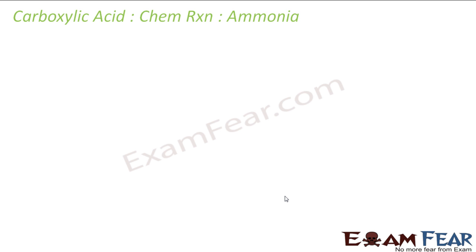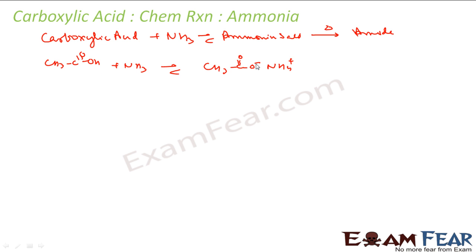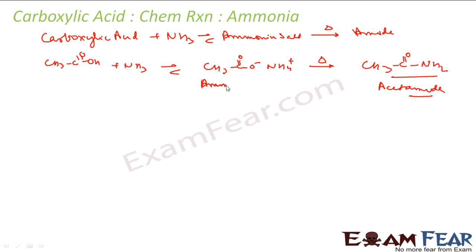Now we'll discuss the reaction of carboxylic acid with ammonia. Carboxylic acid reacts with ammonia to form ammonium salt in an equilibrium, and then when you heat it, it gives you an amide. For example, CH3COOH reacts with NH3 to give CH3COO- NH4+ (ammonium acetate). When you heat this, water goes off (the oxygen from COO- and the two H's from NH4+), and it becomes CH3CONH2, which is acetamide.